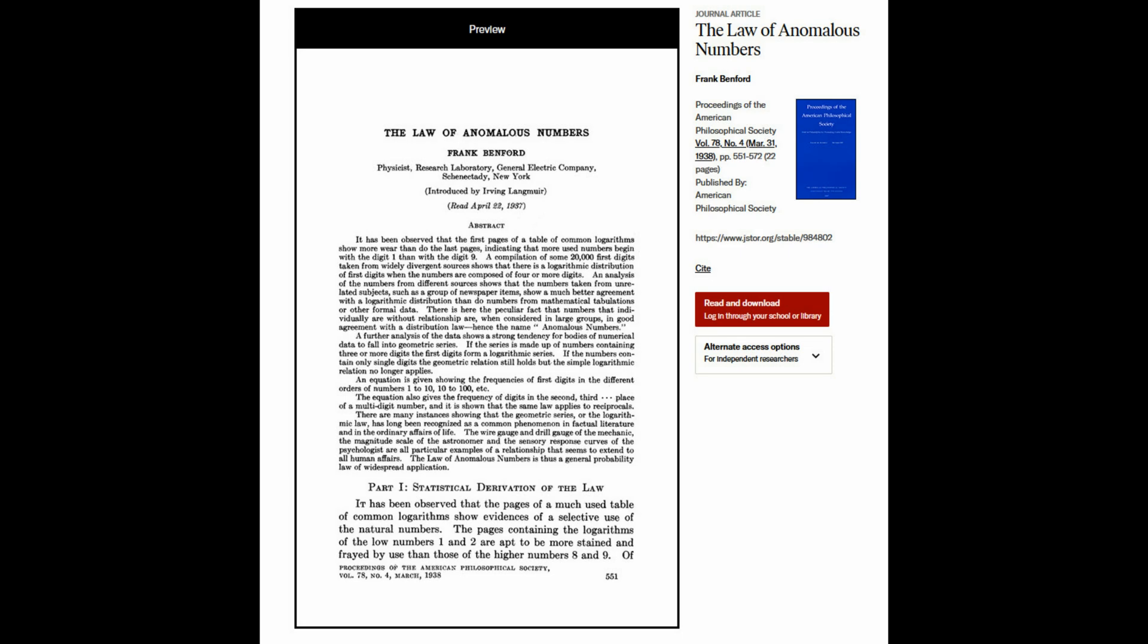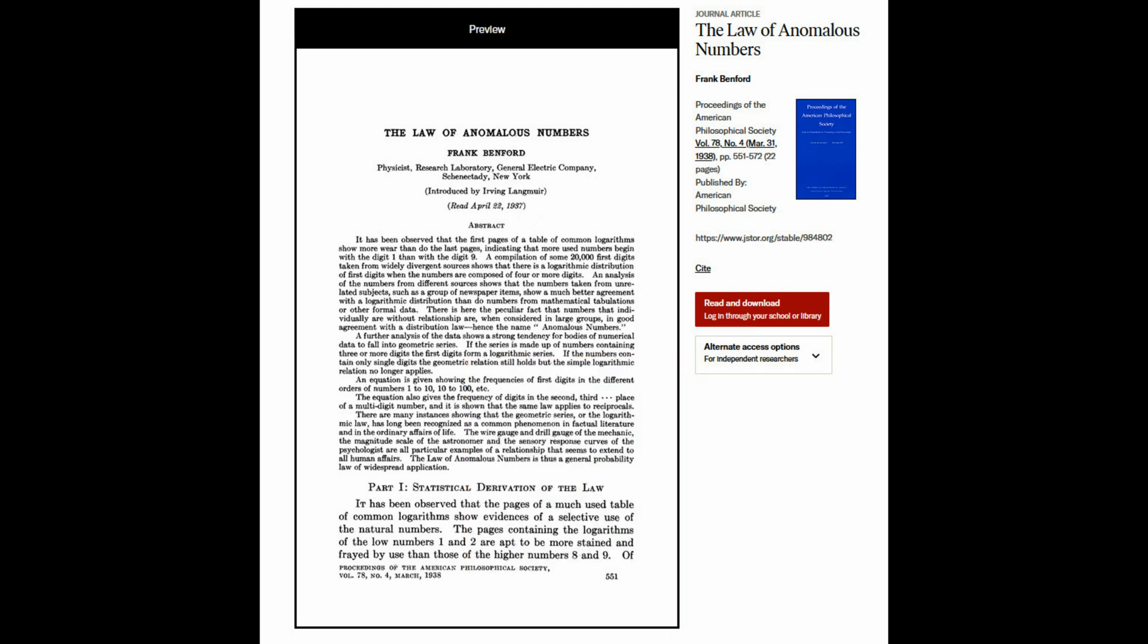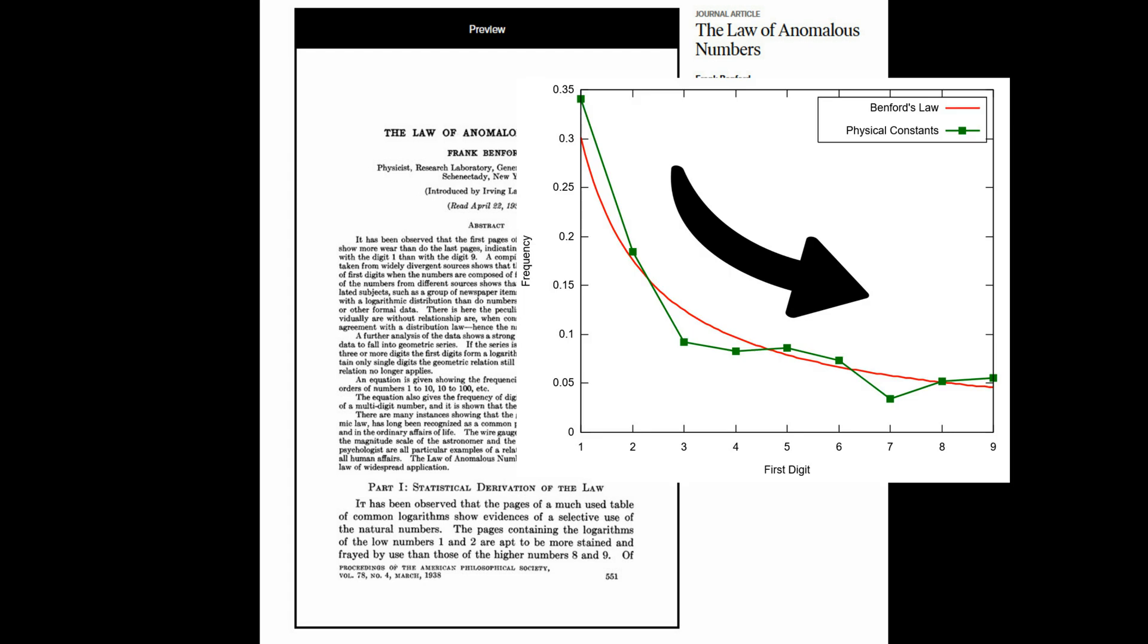Benford's law was discovered over 130 years ago by an American research physicist named Frank Benford, who observed that in a large random collection of data, natural numbers often follow a consistent pattern which showed that small digits occurred more frequently than large digits.